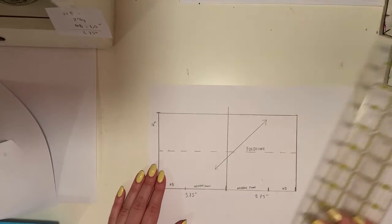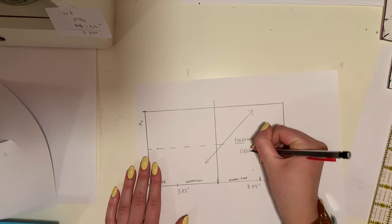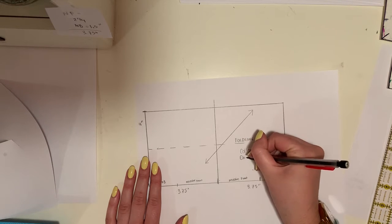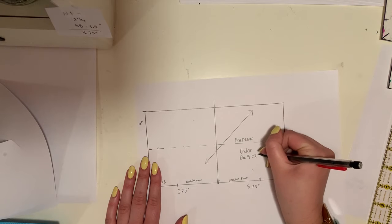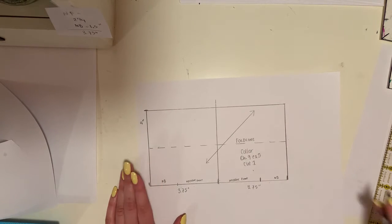There is my grain line, and I'm going to write collar. This is Chapter 9, Example 5, and this is cut one.